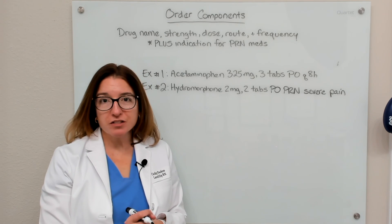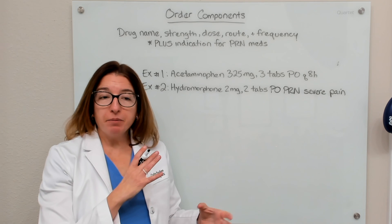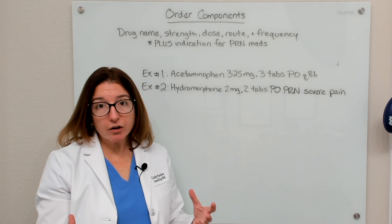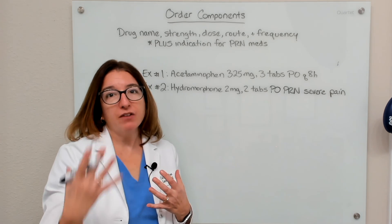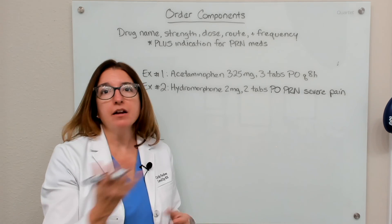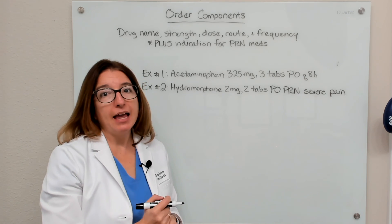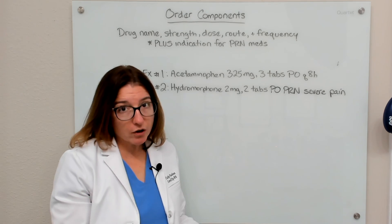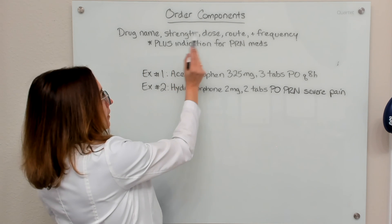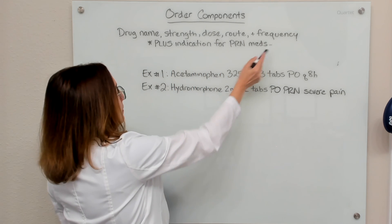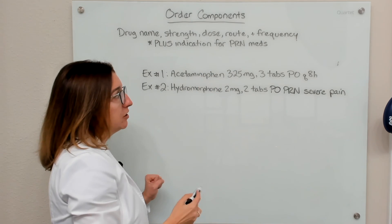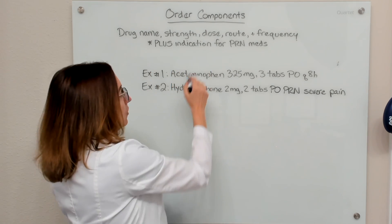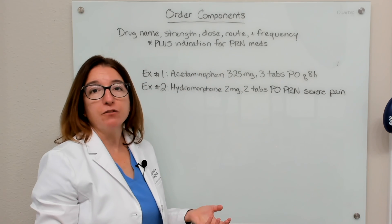A prescription is something the patient would have filled at the pharmacy and take at home in most cases. A prescription order is written by the provider for the nurse or another qualified healthcare professional to administer, and it is typically administered in the healthcare setting. Components of an order include the drug name, strength, dose, route, and frequency. In addition, when talking about PRN medications — medications administered for certain circumstances — we also need to know the indication, or the reason for administration of those PRN medications.